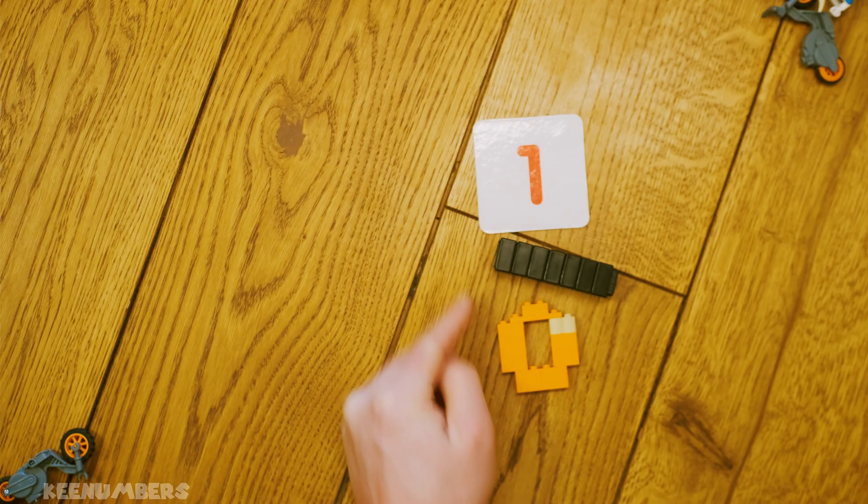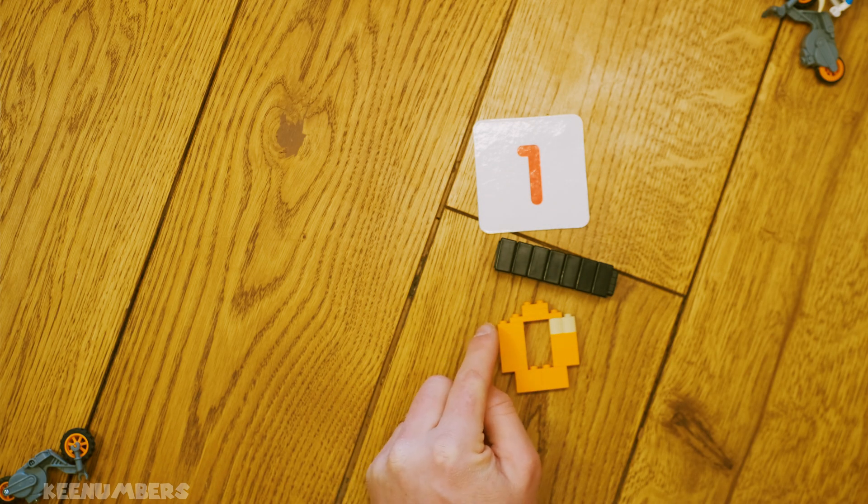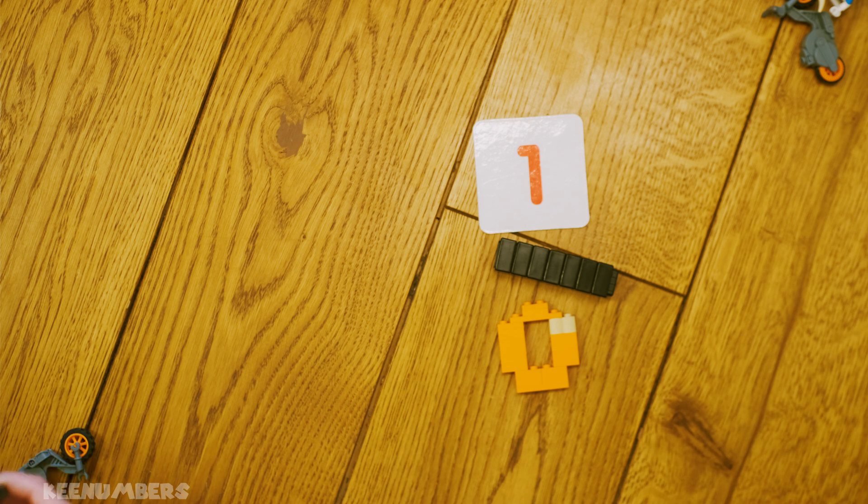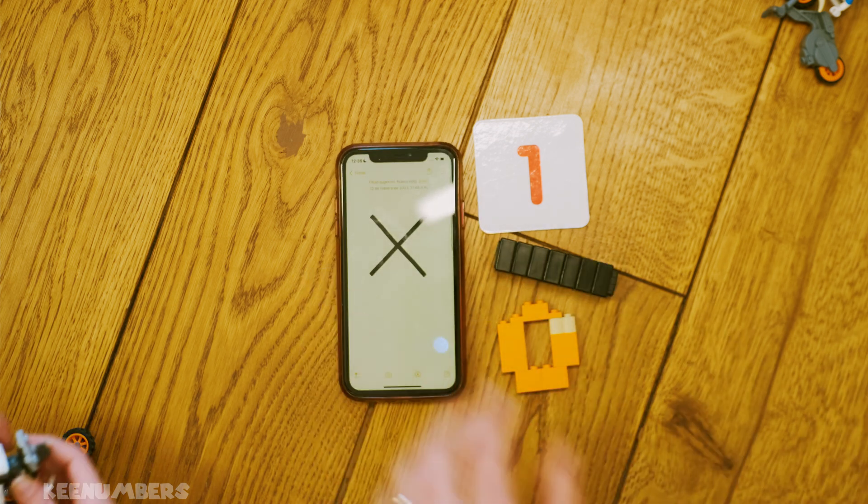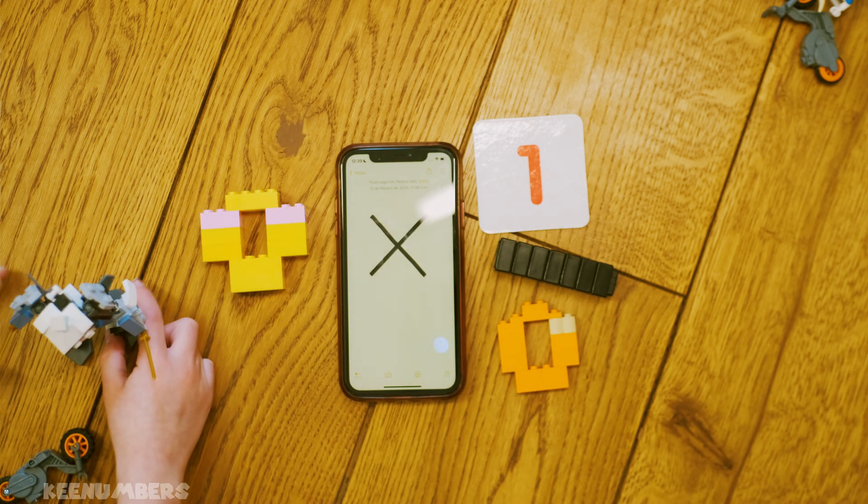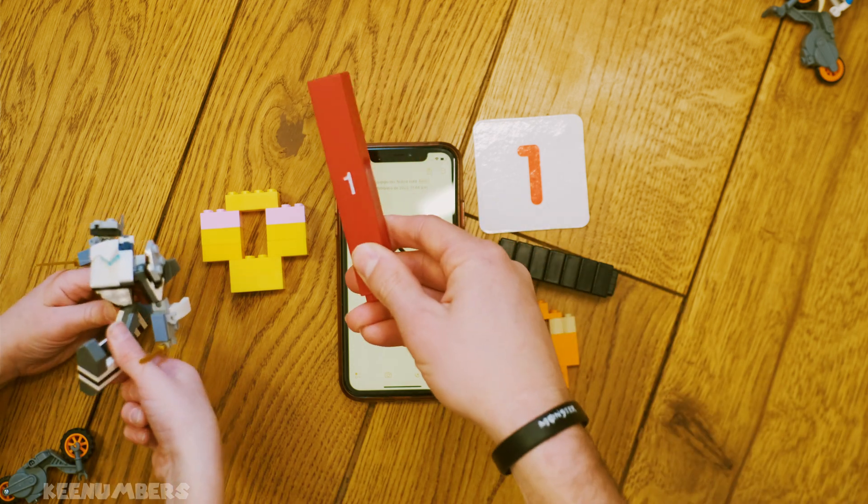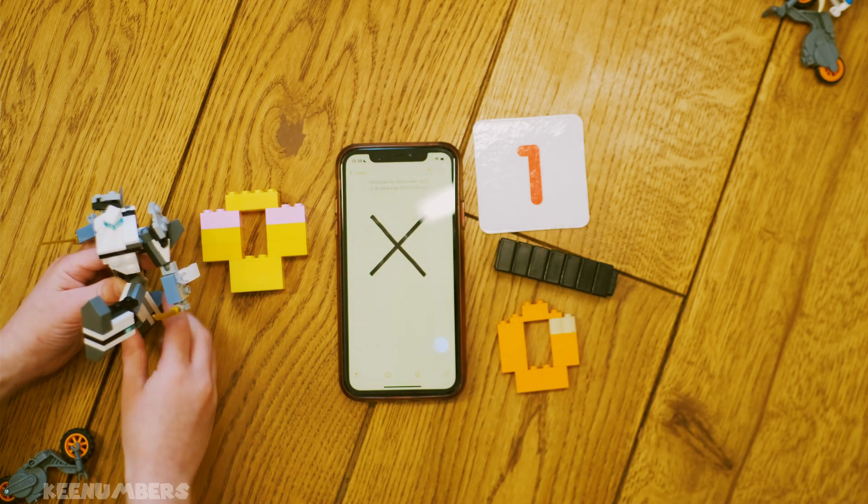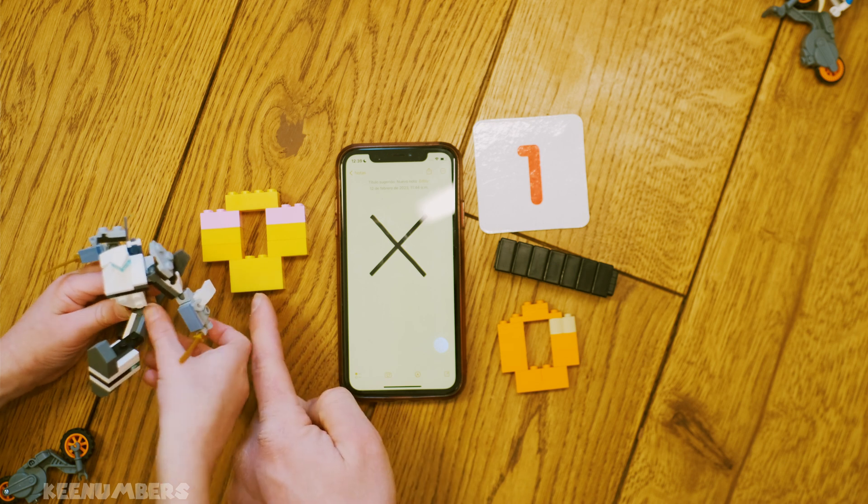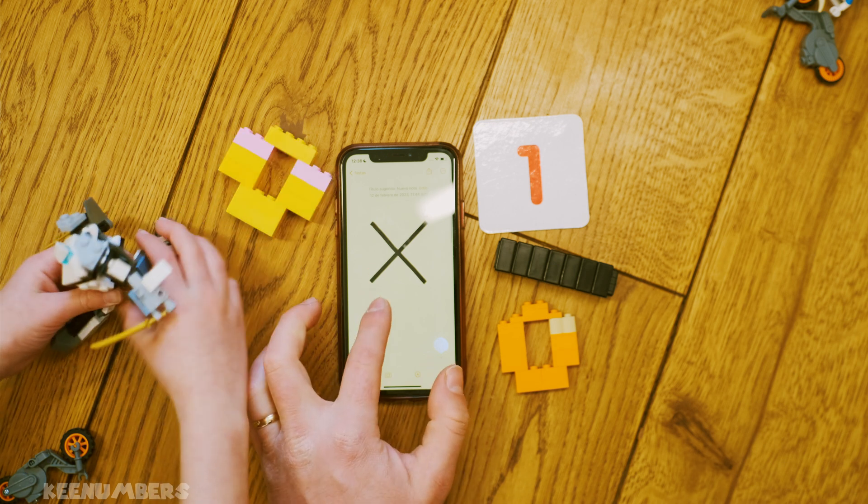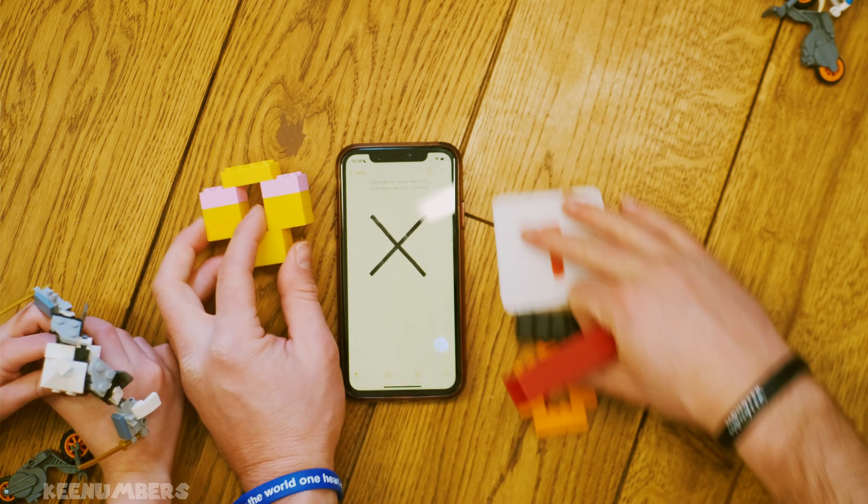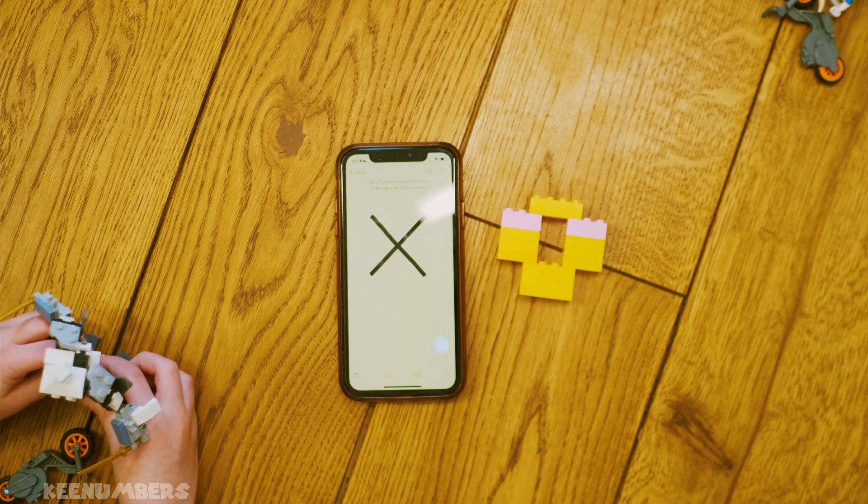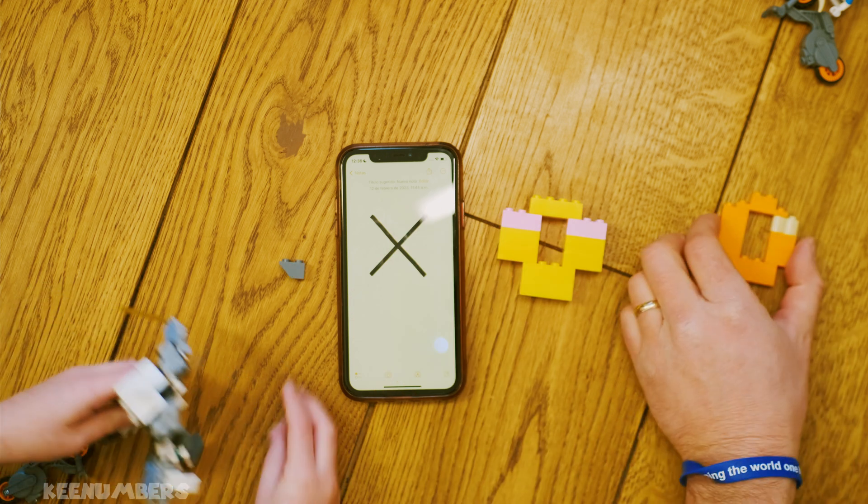If you could divide by zero, that means, by definition, when you multiply the number by zero, you would have to get one. But there's a problem here. Anything times zero is equal to zero.